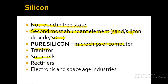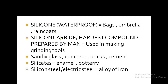Pure silicon is used in microchips of computers, transistors, solar cells, and rectifiers. It is also used in electronic and space-age industries. Silicone is an artificially prepared material that is waterproof, and it is used to make bags, umbrellas, and raincoats.